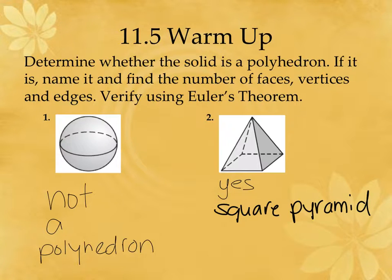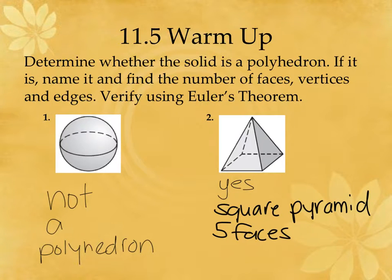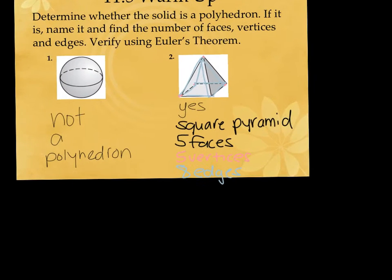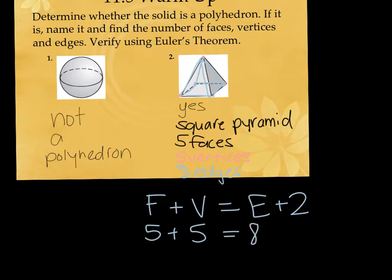How many faces? Five — the four lateral faces on top and the bottom one. How many vertices? Five — four on the base and one at the top. How many edges? Eight — all the lines you would draw to draw this pyramid. Euler's theorem: five plus five equals eight plus two, and ten equals ten, so we know we did it correctly. That's how you use it to verify.